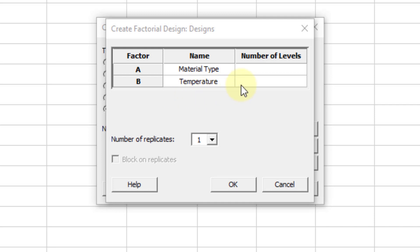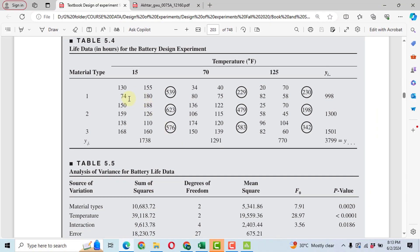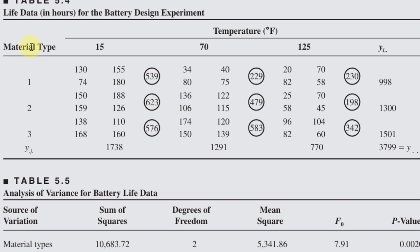After writing the names, select the levels — there are three levels for both factors. Then for the number of replications, this is most important. Replication means for each setting of material type and temperature, how many experiments or observations we have. We count 1, 2, 3, 4 — these are the four observations taken at material type 1 and temperature 15°F.